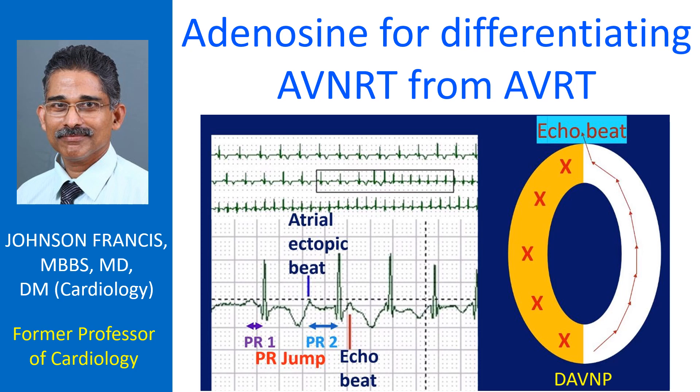Adenosine is used to terminate atrioventricular node dependent arrhythmias like AV nodal reentrant tachycardia and atrioventricular reentrant tachycardia. It is also useful in the treatment of other forms of tachycardia sometimes. Use of adenosine in tachycardias could be for diagnosis of the mechanism as well.